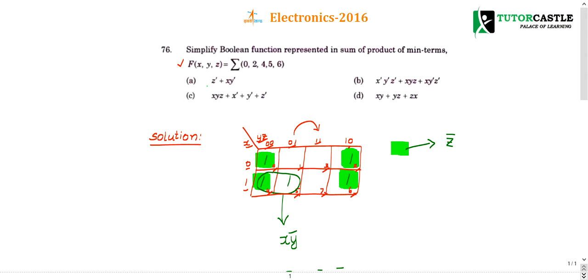Now mark the numbers 0, 2, 4, 5, 6. For that I have given 1 so you can see. For 0 I have given 1 and for 2 I have given 1. For 4 I have given 1. For 5 I have given 1 and for 6 I have given 1.